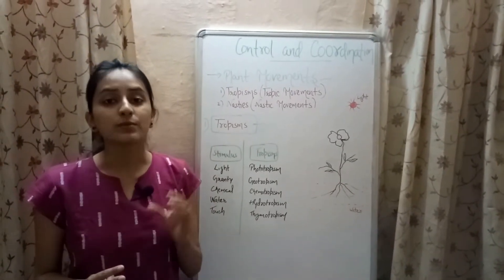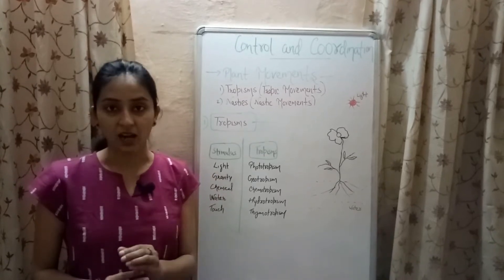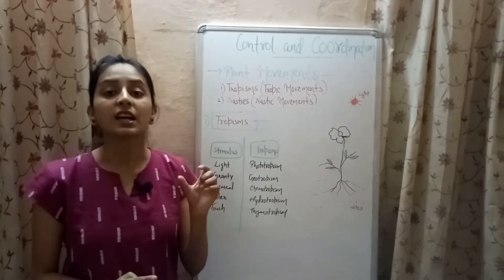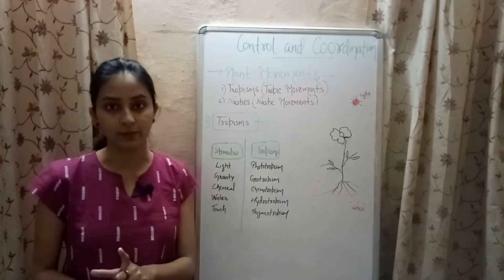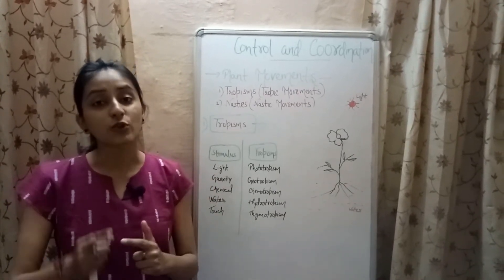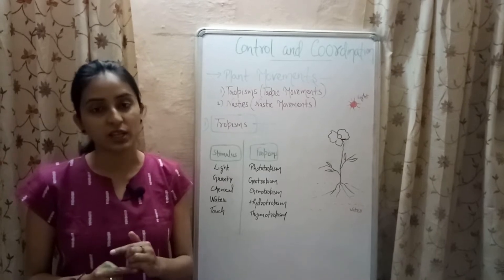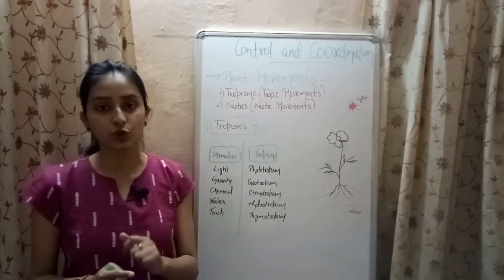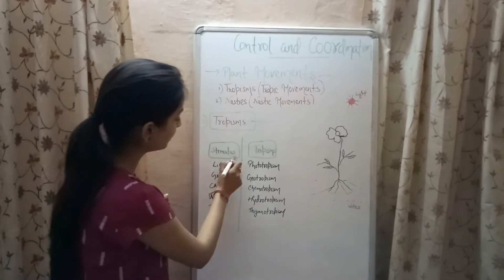When growth movement occurs in the direction of the stimulus it is known as positive tropism, whereas when growth movement occurs opposite to the direction of the stimulus it is known as negative tropism. Let's take an example of phototropism.